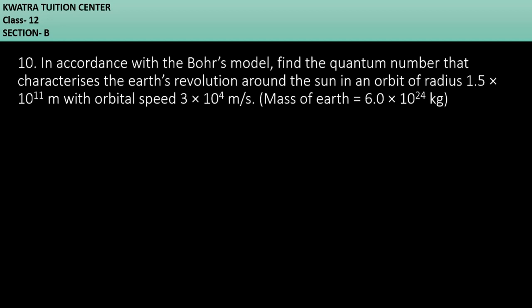Let's start with question number 10. It says: in accordance with Bohr's model, find the quantum number that categorizes the earth's revolution around the sun in an orbit of radius 1.5 × 10^11 meters, with an orbital speed of 3 × 10^4 meters per second.